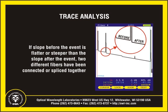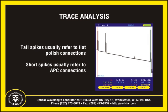If the slope of the line after the event changes — either flatter or steeper — this means that the index of refraction of the fiber before the event is different from the index of refraction after the event, indicating that two different fibers, possibly from different manufacturers, have been connected or spliced together. As a rule of thumb, tall spikes usually indicate flat polish connectors or other highly reflective events such as breaks, shatters, or the end of the fiber, while short spikes usually indicate angled polished connections.